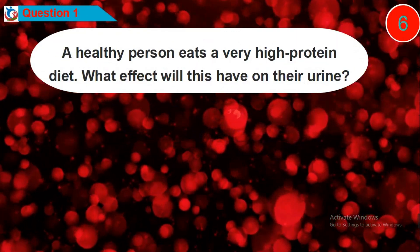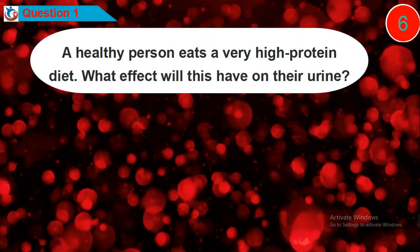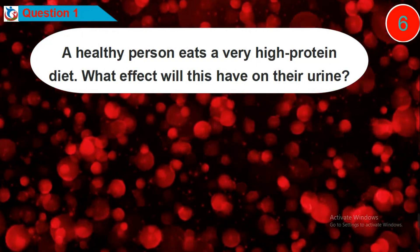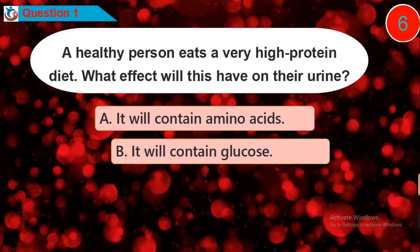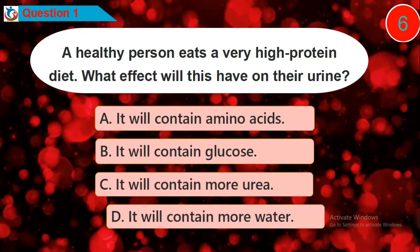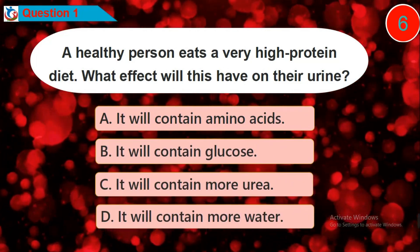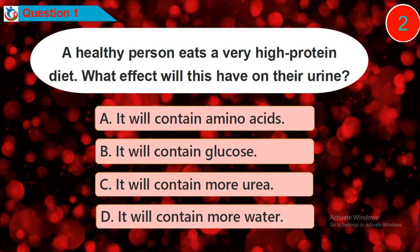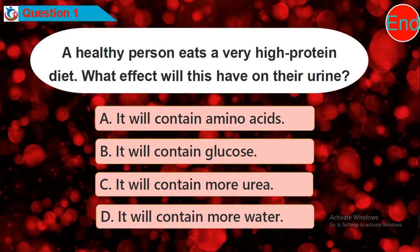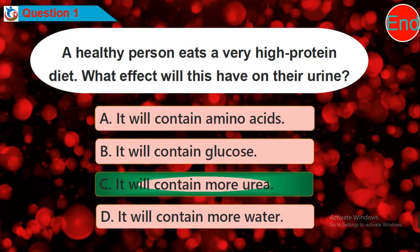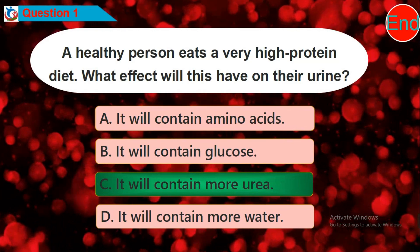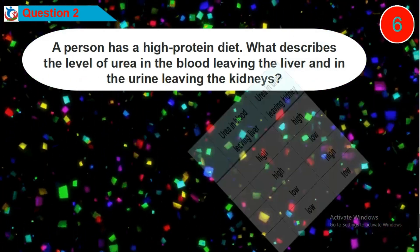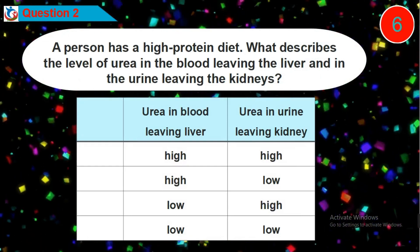Question 1: A healthy person eats a very high protein diet. What effect will this have on their urine? Is it option A, B, C, or D? Question 2: A person has a high protein diet. What describes the level of urea in the blood leaving the liver and in the urine leaving the kidneys?